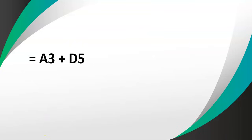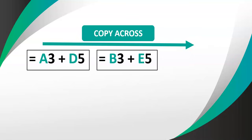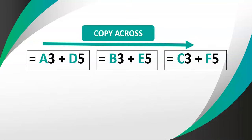We've got a formula A3 plus D5. If we copy this formula across — moving across the cells to the right — what changes is the letters will change. For every block I move across, the letters move up one in the alphabet. So if I move it across one, the A will change to B and the D will change to E. Two cells across and the A becomes C and the D becomes F. The same works copying backwards — the letters go down.